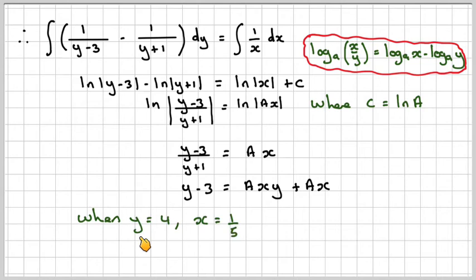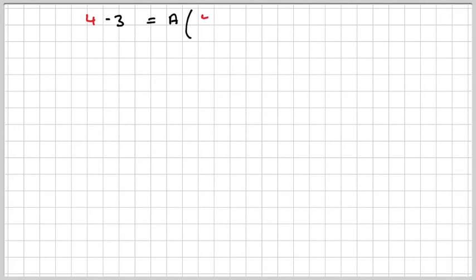If we use what was given in the question, we've got y = 4 and x = 1/5. So we're going to have 4 - 3. Here we have 4/5 of a, and here we have 1/5 of a. That makes a = 1.